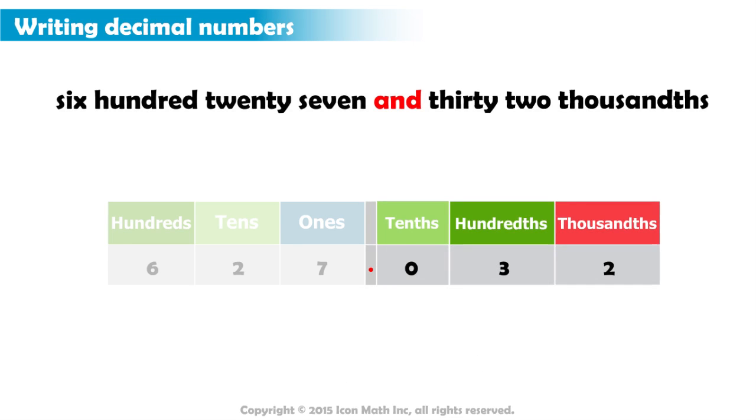In this case, we have two digits in the numerator, which is less than three zeros in the denominator. So, we write a zero before the number 32.